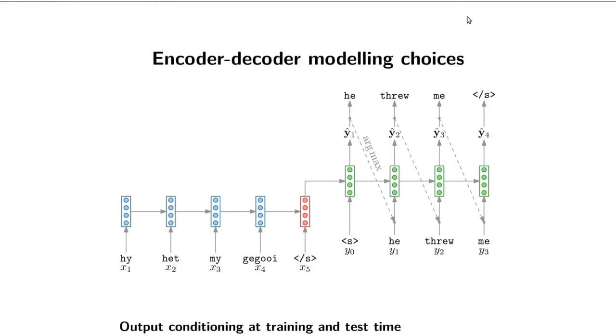There is also a training scheme where during training instead of feeding in the ground truth word he, you would actually sample from Y hat sometimes and take the argmax and feed that into the next time step.